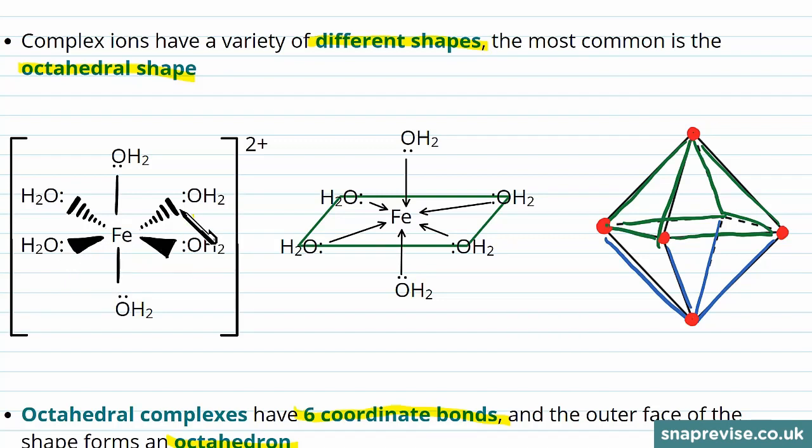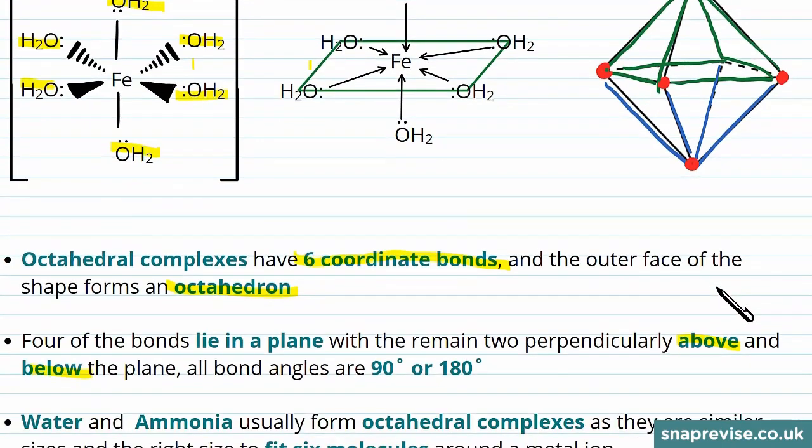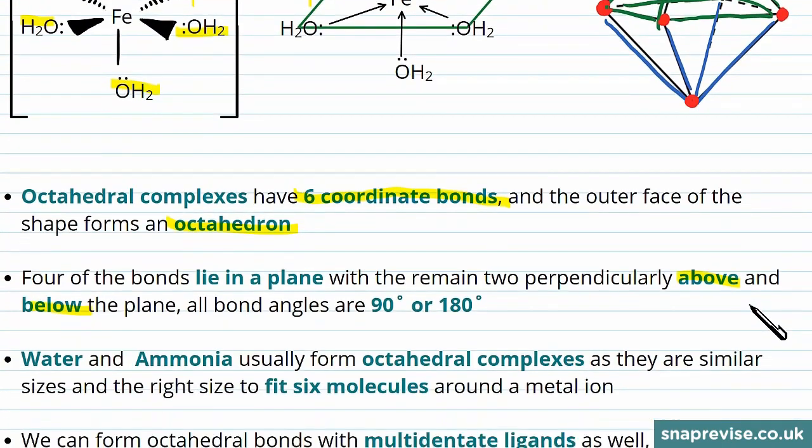And it's these four ligands here which form the corners of the plane shown by this green square here. You can think of it as a flat surface. And then the other two ligands are above and below that plane, shown again here with the green square to try and give it some more perspective.